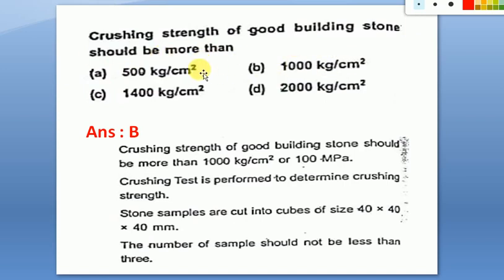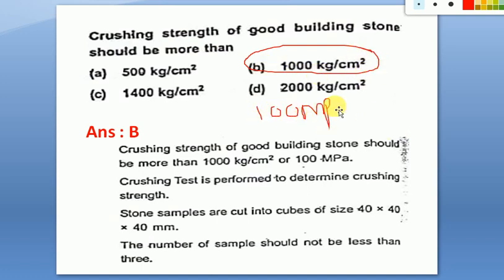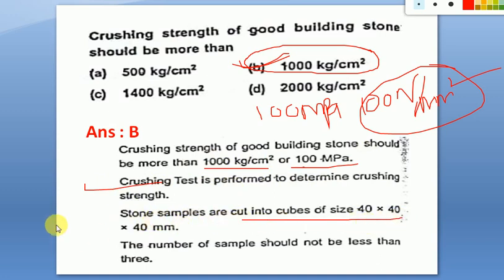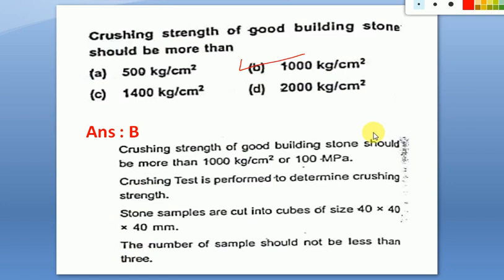The crushing strength of good building stone — now given in different units. Previously it was 100 MPa or 100 N/mm². Converting to kg/cm², you get 1000 kg/cm². The crushing test is performed to determine crushing strength; stone samples are cut into cubes of 40×40×40 mm. The number of samples should not be less than 3. The answer is 1000 kg/cm².